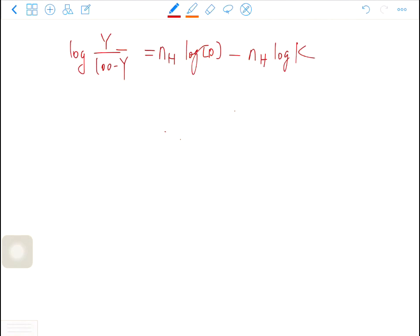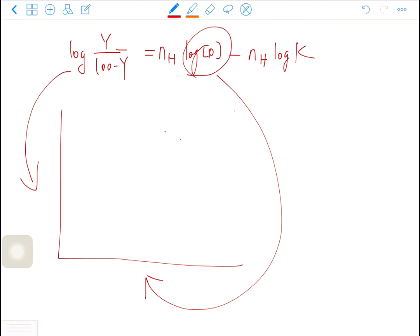So on the y-axis of the Hill plot, it is the log y over 100 minus y. On the x-axis is log d, and the slope is the Hill coefficient. If the Hill coefficient is 1, the slope is 1. The slope can be bigger than 1 or smaller than 1.